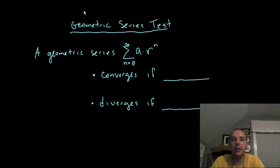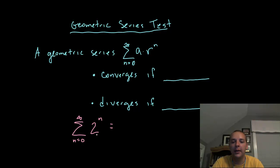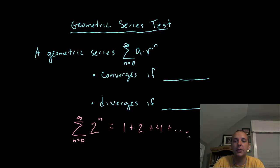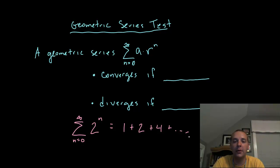Let's look at a simple example to understand when geometric series converge or diverge. If we had the sum of two to the n, expanding that gives: two to the zero (that's one), plus two to the first, plus four, plus eight, plus sixteen. It's clear this will diverge because the terms are getting bigger and bigger. Any time you have a base where higher powers make the term larger, it's going to diverge when you add them all up.